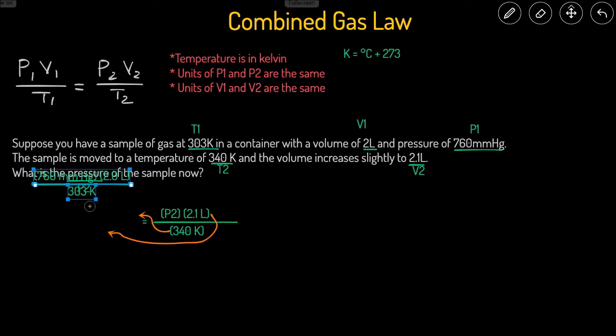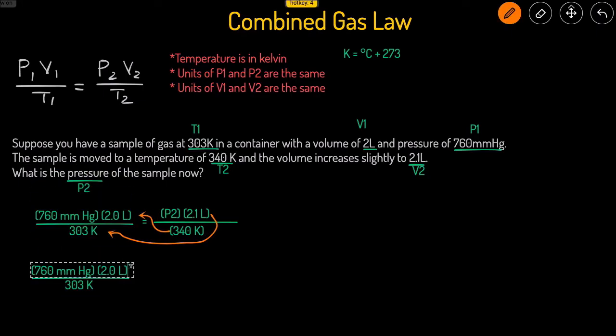And the 2.1, since it's already on top, we can just divide and bring it to the bottom. So that means the new equation is going to be that times 340 degrees Kelvin, and then on the bottom you have 2.1 liters as well. We can just multiply the top and then divide by the bottom.